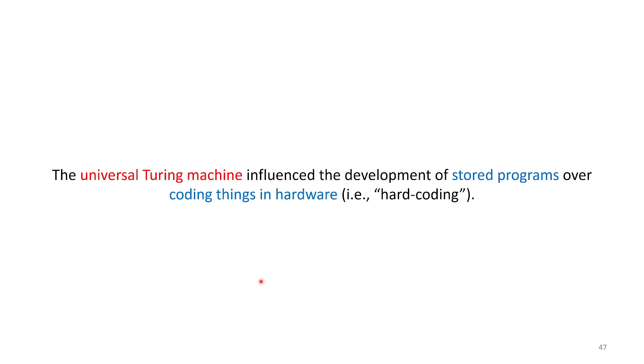The proof that the universal Turing machine exists in Turing's paper influenced early mathematicians and computer scientists to think about the possibility of stored programs—programs you could load into universal machine hardware that could run any program you want. This is in contrast to previous visions of computing machinery where everything would be hard coded into hardware, with the exception of possibly the input.